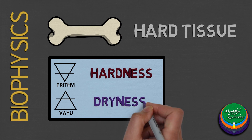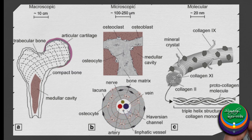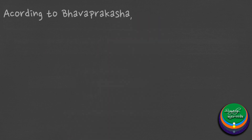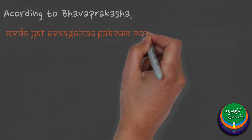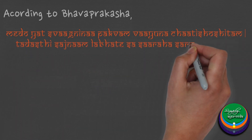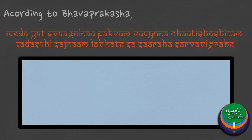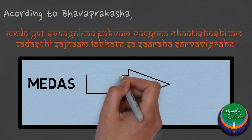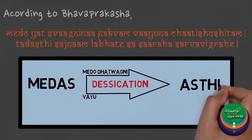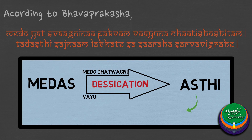Even though Rukshapradhana, we know that bones also contain living cells and the material of bone is basically a type of collagen which is akin to Kapha. According to Bhava Prakasha, Medo dhatu undergoes desiccation by the action of Medo dhatu agni and Vayu. The Medas get transformed into Asthi, which is Rukshat, and this is responsible for maintaining the structure of the body.